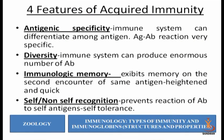Fourth is self and non-self recognition. The immune system can very well differentiate between self and non-self. The immune system is tolerant of self-antigens and non-tolerant of non-self antigens. Prevention of reaction against self-antigens is very important. So these are the four features of acquired immunity: it is antigen-specific, it has diversity, cells of the immune system will memorize the antigen, and it can differentiate between self and non-self.